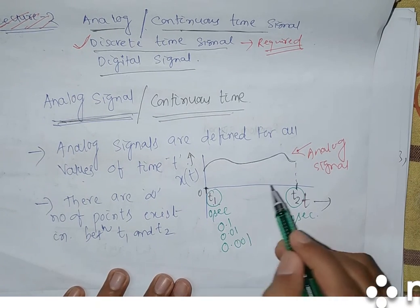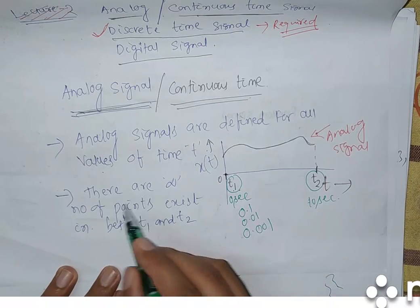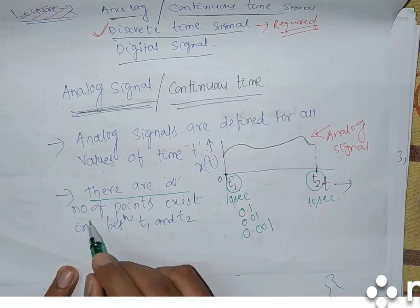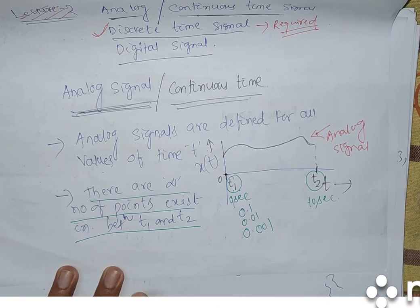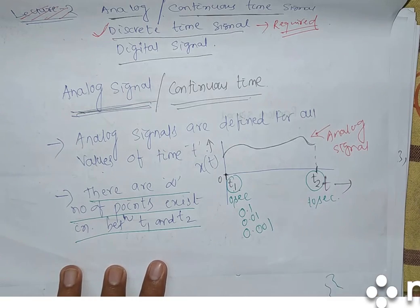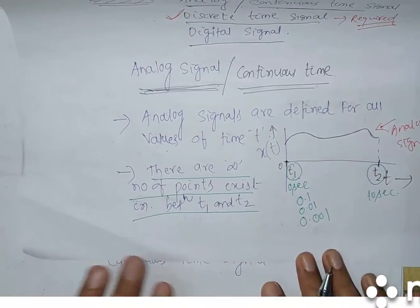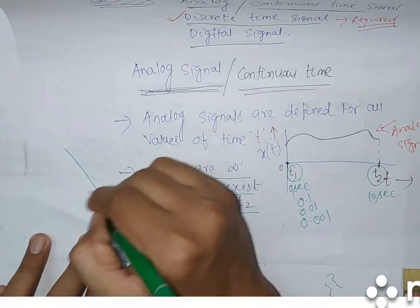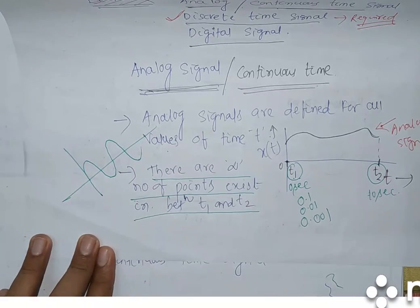There is no break point, and there are infinite number of points existing between T1 and T2. You can take any two values and the infinite number of points exist. This is just one example. If you want to take a sinusoidal signal, this is also a continuous time signal. Any random signal you take — this limit you can take anything — it will be continuous by nature.